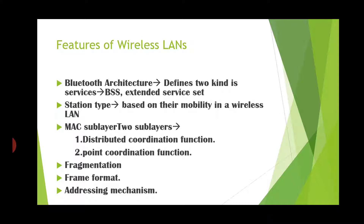Now we will see the features of wireless LAN. The first feature is that Bluetooth architecture defines two kinds of services: BSS and Extended Service Set (ESS), based on station mobility in a wireless LAN. Third, the MAC sublayer has two sublayers: Distributed Coordination Function (DCF) and Point Coordination Function (PCF). Fourth, fragmentation, frame format, and addressing mechanism. These are the features of wireless LAN.